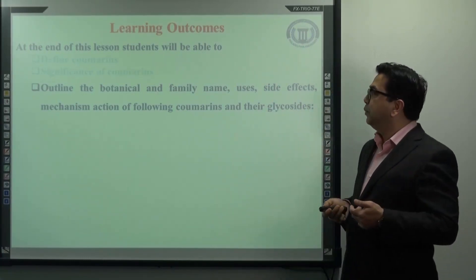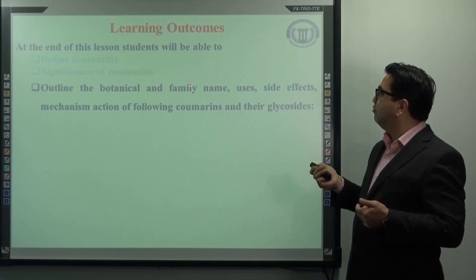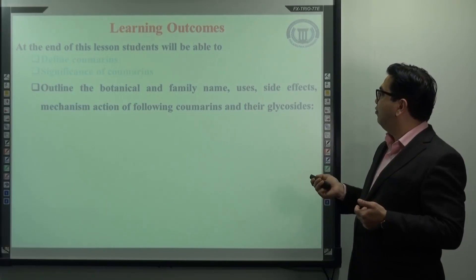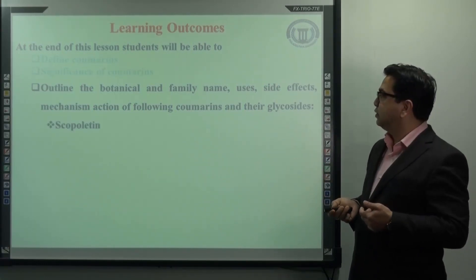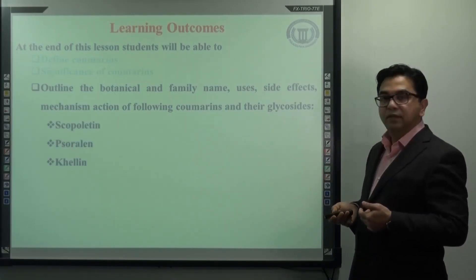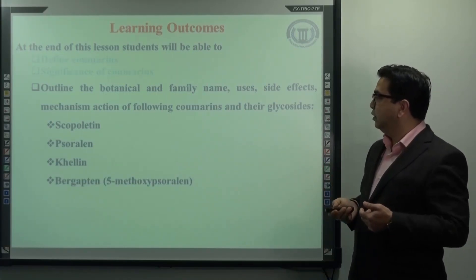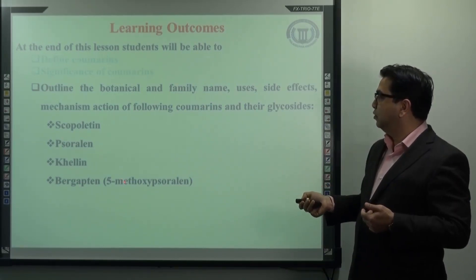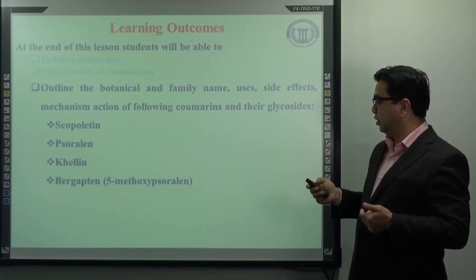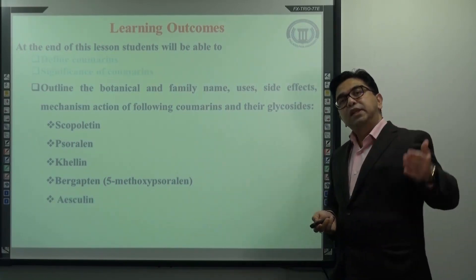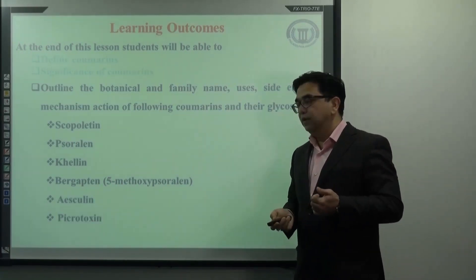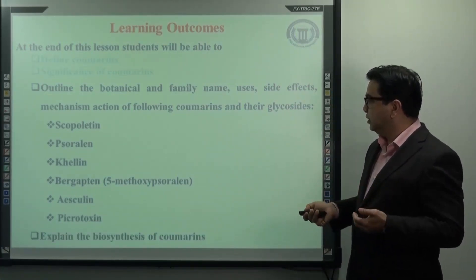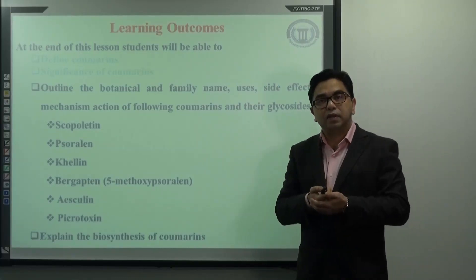At the end of this lecture, you will be able to outline the botanical name, family name, uses, side effects, and mechanism of action of the following coumarins: mainly scopaletine, psoralen and its derivatives, then khellin, and bergapten — which is another derivative of psoralen known as 5-methoxypsoralen. In the next lecture, we will continue with oscilene and picrotoxin. This lecture will also discuss the biosynthesis of coumarins.